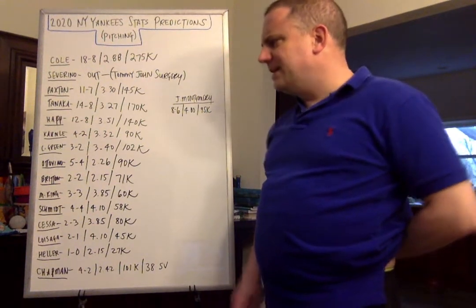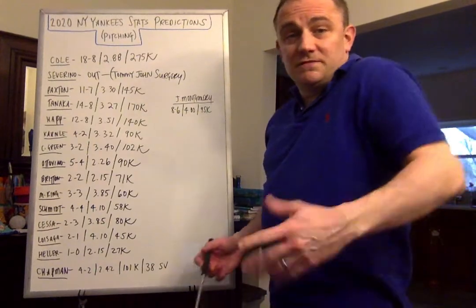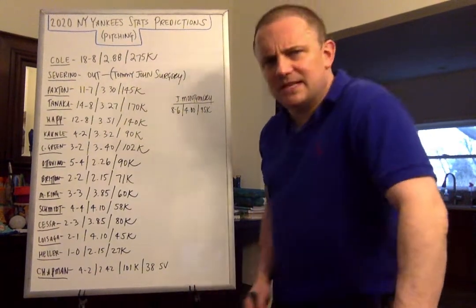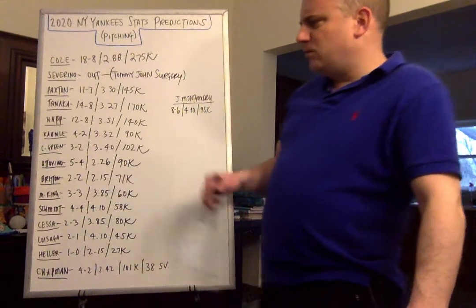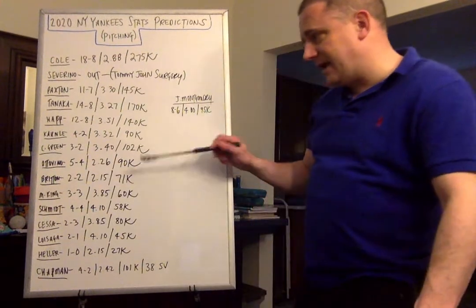And I see him going about 5-4. He's generally involved in a lot of decisions, and I don't see that changing. So I see him going about 5-4 with a 2.26 ERA and about 90 strikeouts.